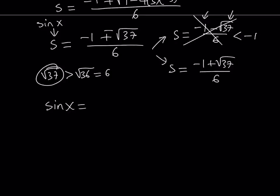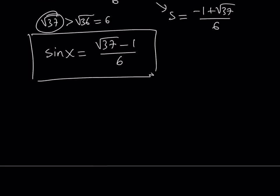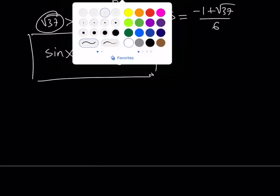So from here, sine x happens to be, and I can write the radical 37 first, minus 1 divided by 6. We're not looking for x. So if we were, then we could say something like the inverse sine of this number, but that's not what we're interested in. We're interested in finding sine of x. And that happens to be the solution or the answer. Okay. Let's take a look at the second method.